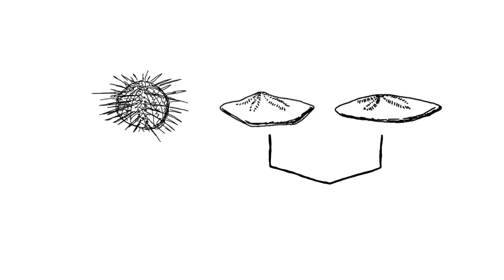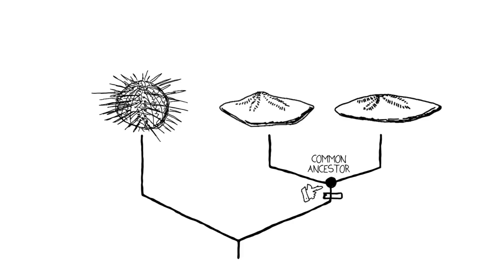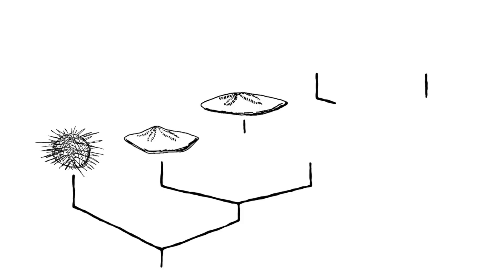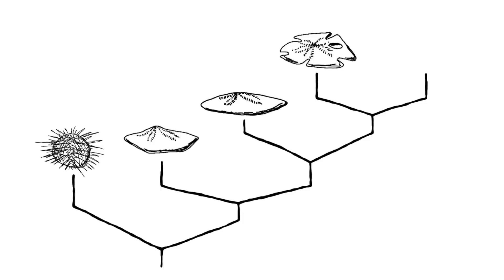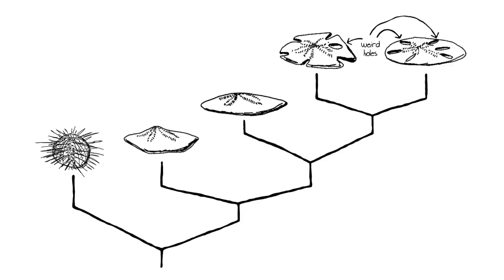A feature that's arisen only once in the evolutionary history of the sea urchins that led to the sand dollars. The suggestion is that these two share common ancestry, a common history, because right at this point they evolved this characteristic of being flat. But within the sand dollar group, all of which we now know share common ancestry, you can have further elaborations on this flat form. For example, some will have weird holes through their bodies that also represent unique evolutionary events within the sand dollar grouping.